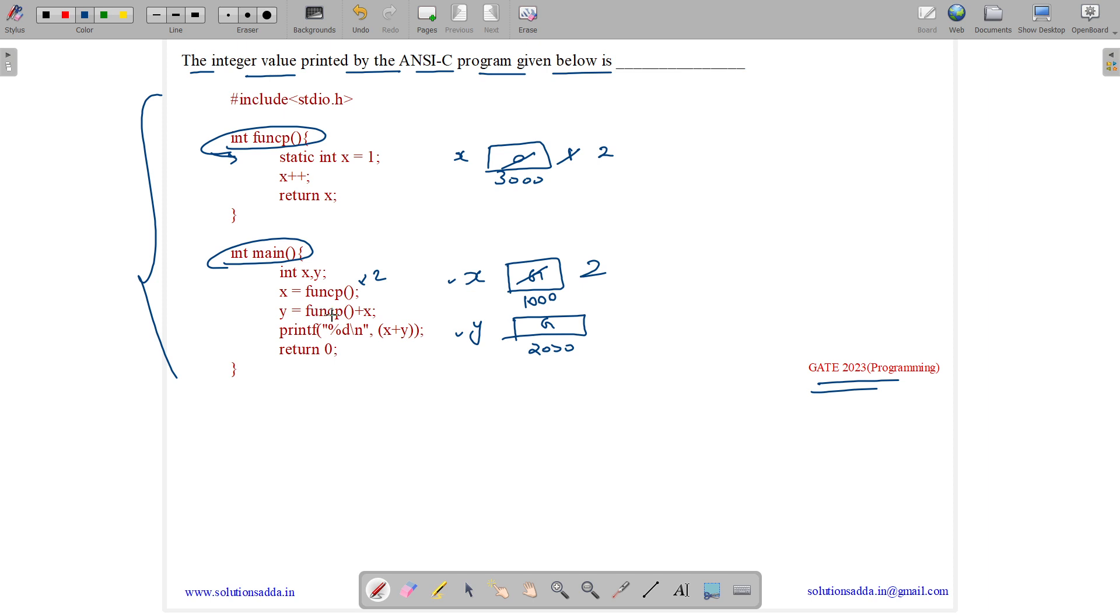Then we do y equals to funcp plus x. So funcp is called again. Initialization is not done. It's done only once. Then we have x plus plus. So it becomes 3. It returns x means it returns 3. So we get 3 over here.